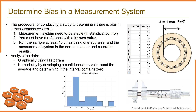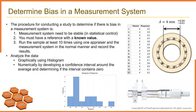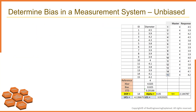The first step is to make a histogram of the results. This histogram shows that the diameter results are spread out around the reference value of 4 millimeters, which indicates that there is no bias present.